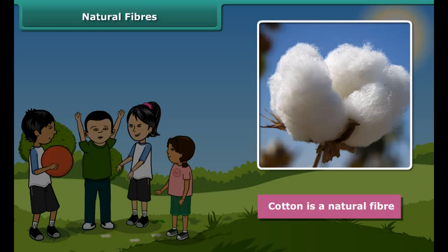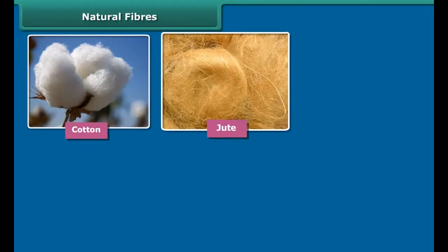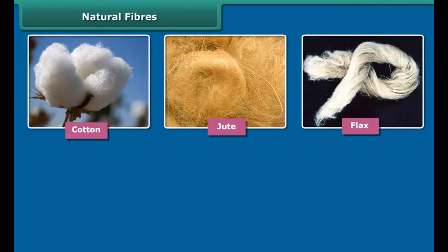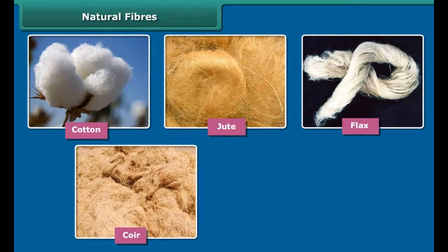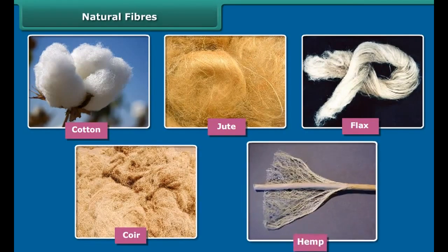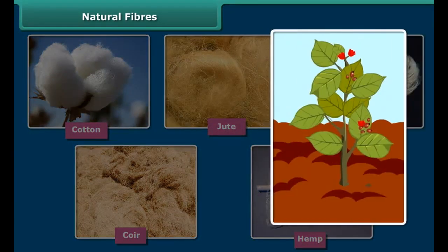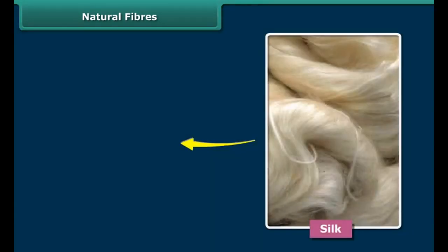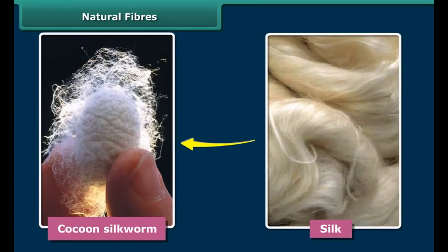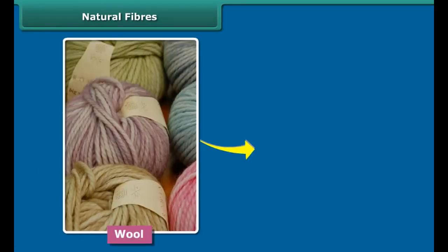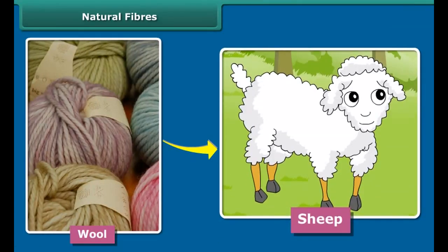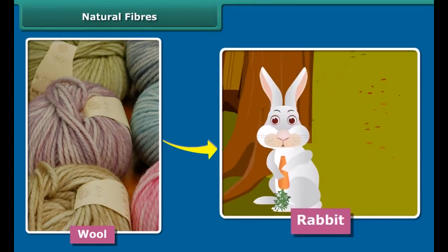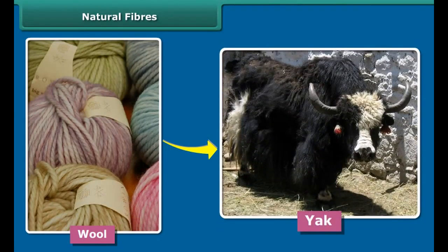Fibers can be both natural or artificial. You feel comfortable when you wear cotton clothes in summer — cotton is a natural fiber. Natural fibers like cotton, jute, flax, coir, and hemp are obtained from plants. Silk fiber is drawn from the cocoon of the silkworm. Wool is obtained from the hair of animals like sheep, goat, rabbit, yak, and camel.